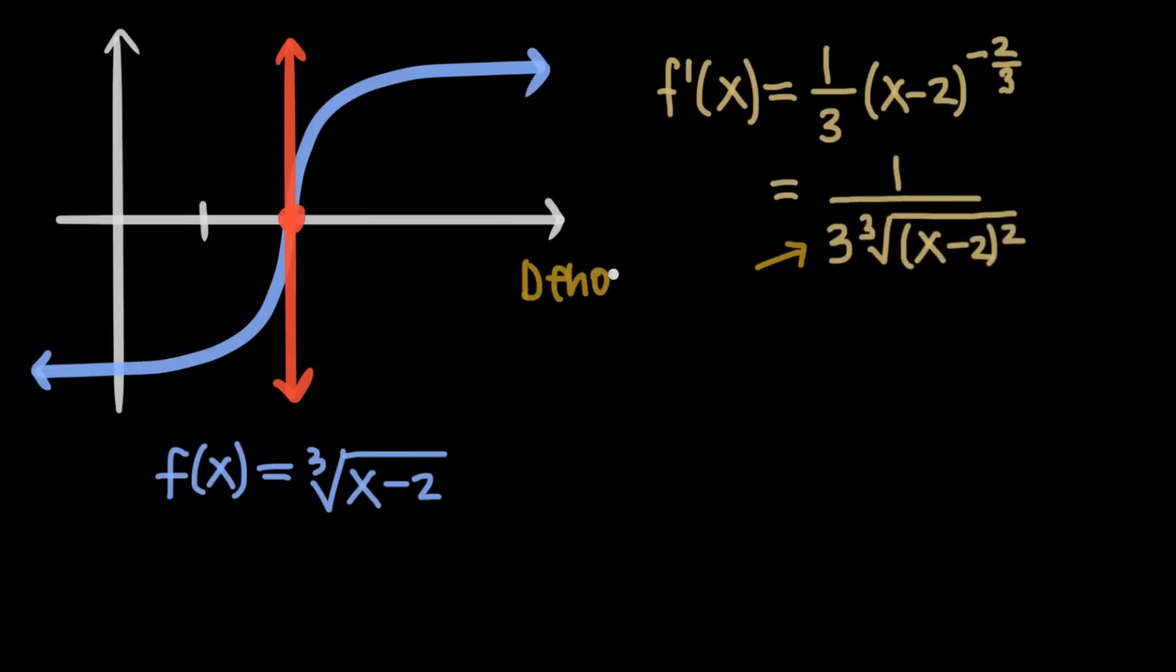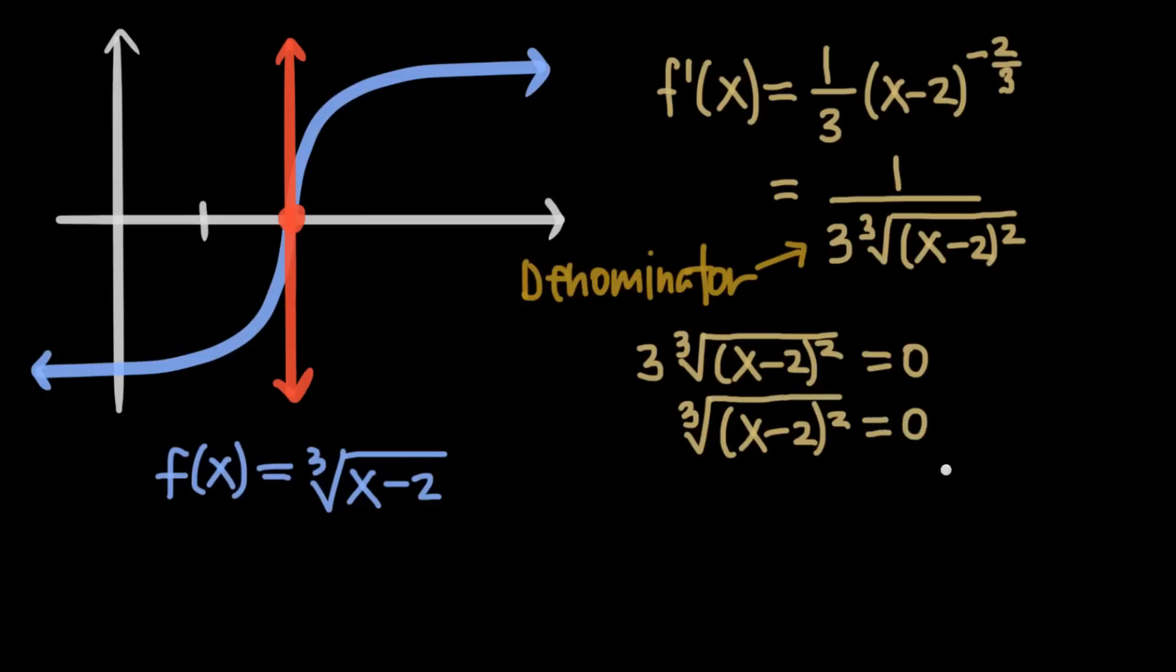We know that any function is undefined where its denominator is equal to 0, so we can simply set the denominator of the derivative equal to 0 and solve for x. We'll start by dividing both sides by 3, which will cancel the 3 on the left-hand side and still just leave us with 0 on the right-hand side.